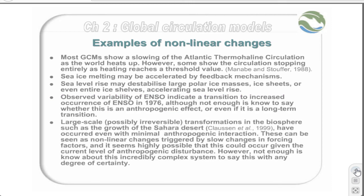Large-scale and possibly irreversible transformations in the biosphere, such as the growth of the Sahara Desert, have occurred even with minimal anthropogenic interaction. These can be seen as non-linear changes triggered by slow changes in forcing factors, and it seems highly possible that this could occur given the current level of anthropogenic disturbance. However, not enough is known about this incredibly complex system to say this with any degree of certainty.